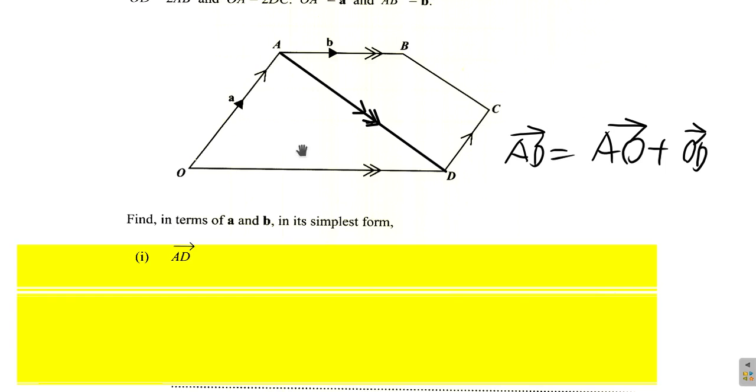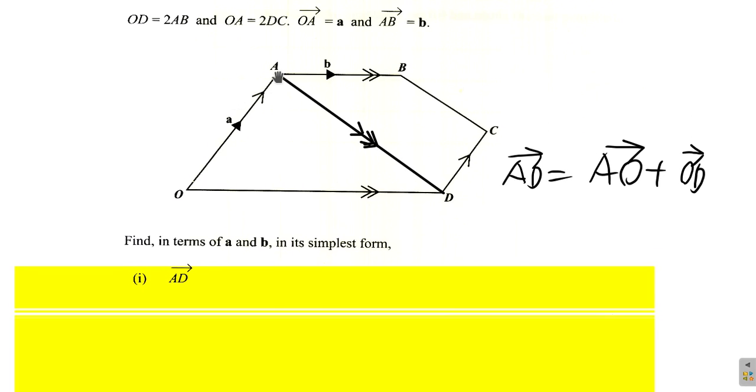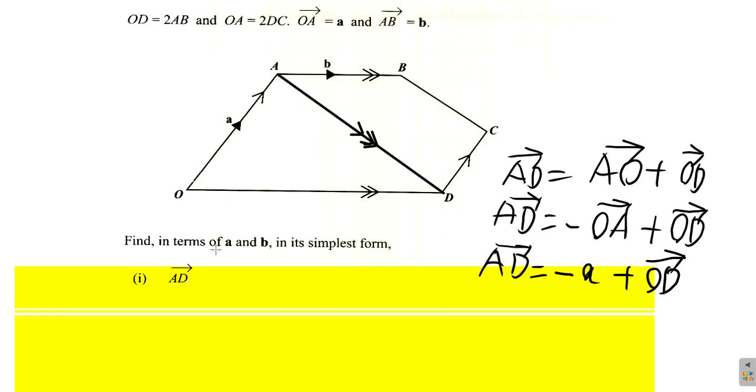Now what happened here? AO is the inverse of OA. So you can say AD equal to negative OA plus OD. Now let's say OA is a. So you can say AD is equal to negative a plus OD. So right now you have OA in terms of a.